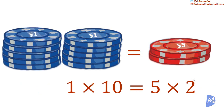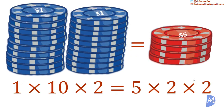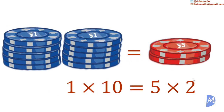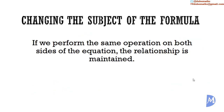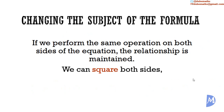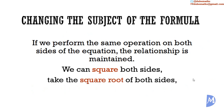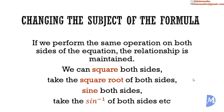Starting with the same equation, if we multiply both sides by the same quantity, the relationship remains — multiplying by 2, they are still equal. Also, when we divide both sides by the same quantity — for example, dividing by 2 — both give 5. Whatever we do to one side of the equation, we have to do to the other side to maintain the relationship. It follows that we can square both sides, find the square root of both sides, find the sine or sine inverse of both sides, etc.